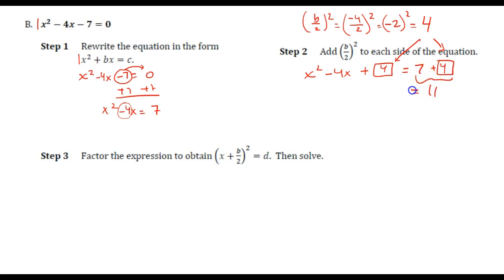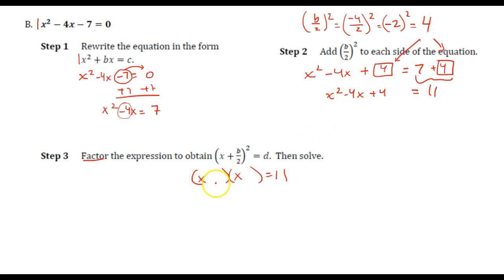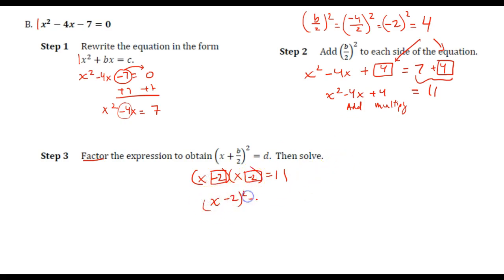That right side would be 11. And x squared minus 4x plus 4 — factoring this: x times x gets me x squared, and what two numbers multiply to get 4 but combine to get negative 4? Negative 2 and negative 2. So that would be x minus 2 squared equals 11. We'll go ahead and square root both sides.